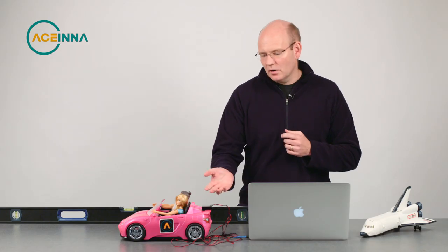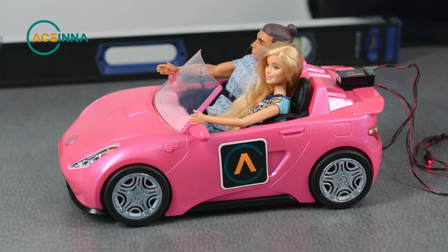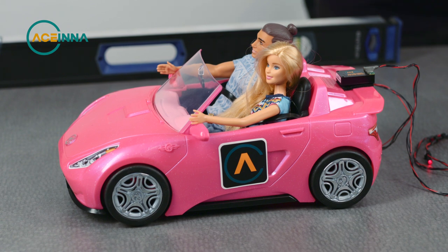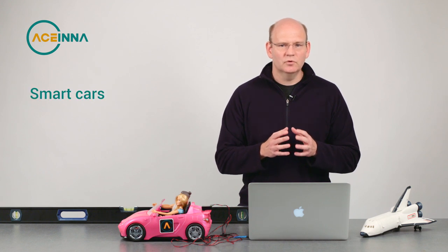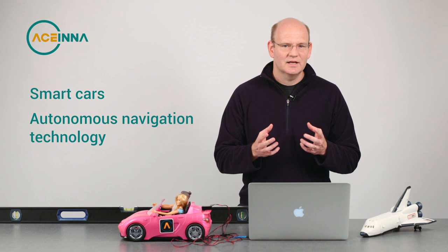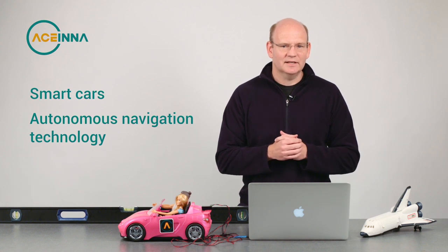Now, what about a car? Why would Ken and Barbie need dynamic tilt measurement in their car? Well, traditionally, they might not have needed it, but now with cars getting smarter and the move to autonomous navigation technology in vehicles, there is a real need for accurate dynamic orientation data in the car.